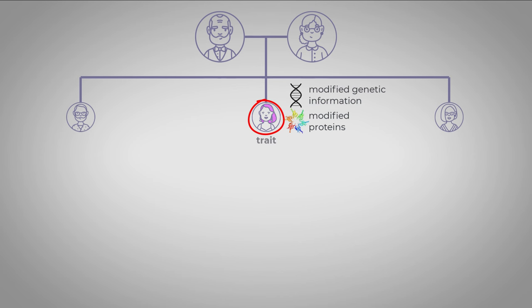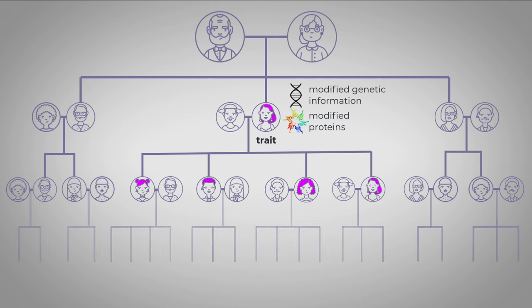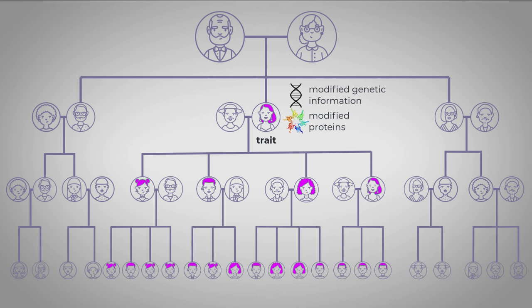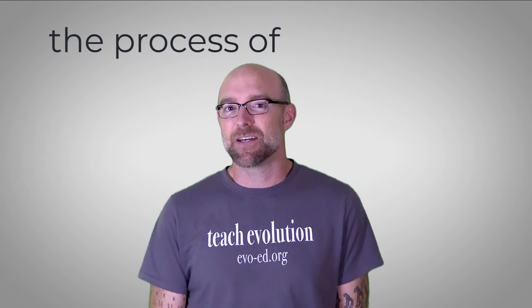And whatever trait that that protein is responsible for is now a little bit different in the offspring compared to the parents. If the newly modified trait results in a higher average reproductive output, then over subsequent generations, that new trait would spread throughout the population. This is the process of evolution.